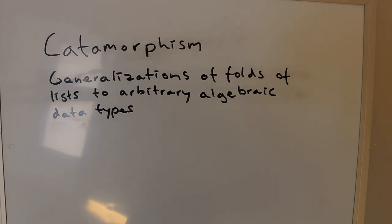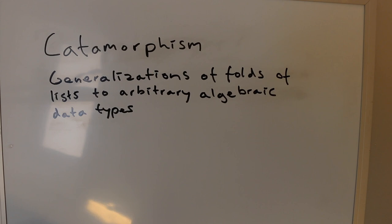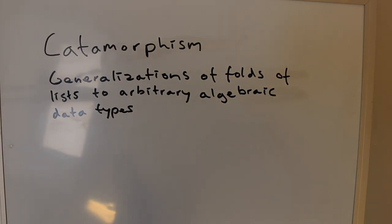In this video we'll try to show by example what a catamorphism actually is. We'll show a couple of examples of actual catamorphisms, then see what these examples have in common, and then abstract over the commonalities. Doing so will help us understand what a catamorphism is.